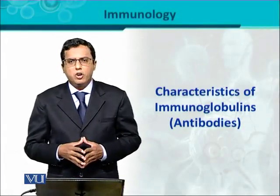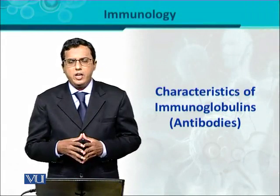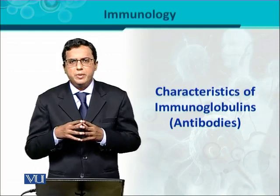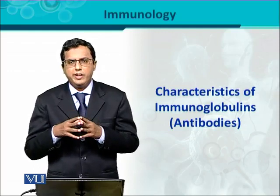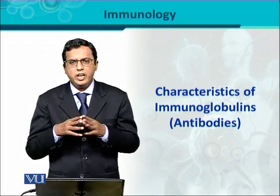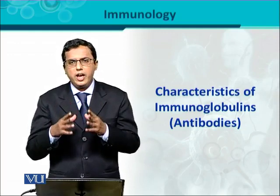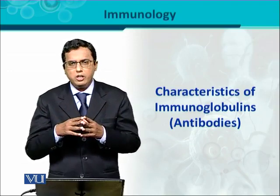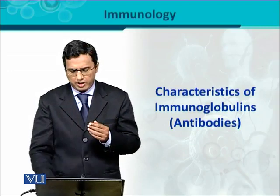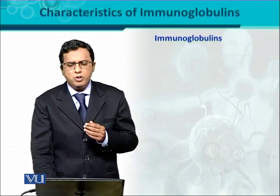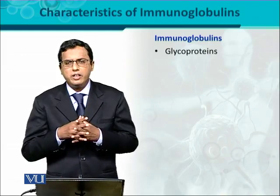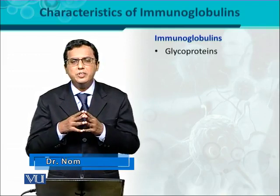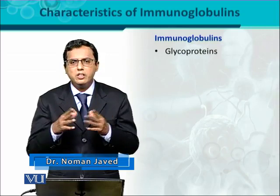Characteristics of immunoglobulins or antibodies. Antibodies are the products of the specific immune response - when the specific immune response is activated, it produces certain products called antibodies, because they react with the antigen. That's why these are also called immunoglobulins. Immunoglobulins have certain characteristics: their nature is that of glycoproteins, meaning proteins which have bonded with certain carbohydrates.